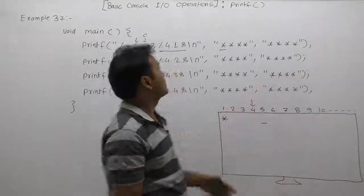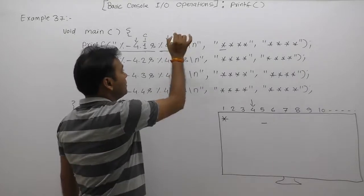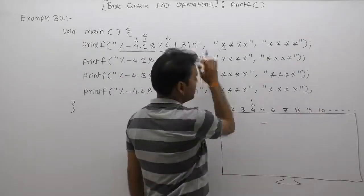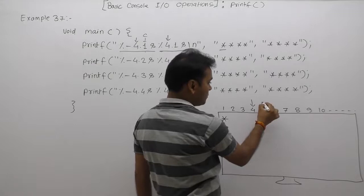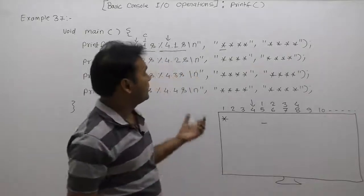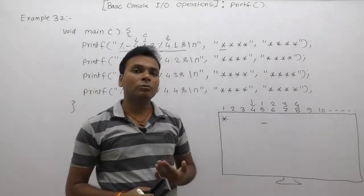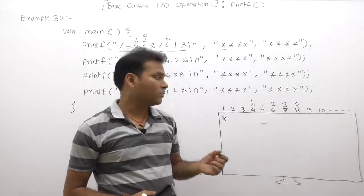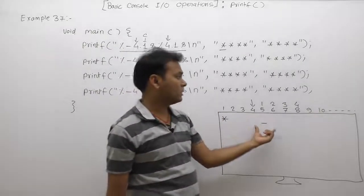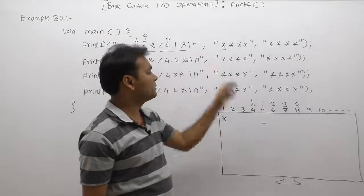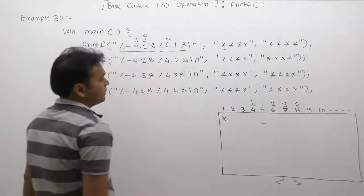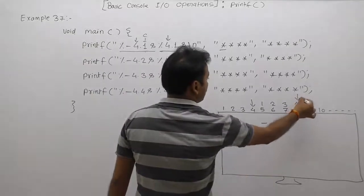The width value is always counted from the current position of the cursor. After displaying the first message, the cursor is on the fifth position. Therefore, for the second format specifier, we count the width value of four from the current cursor position, and the next value is displayed from that place onwards.